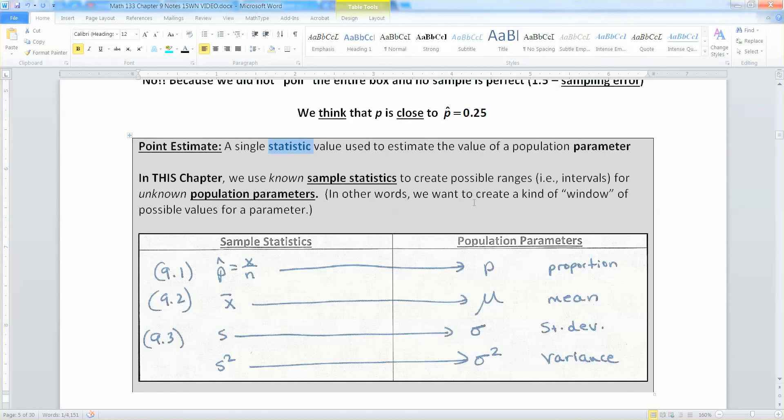Called an interval. And then you think that these population values fall in that interval. But you don't know for sure, because you can never get everybody.